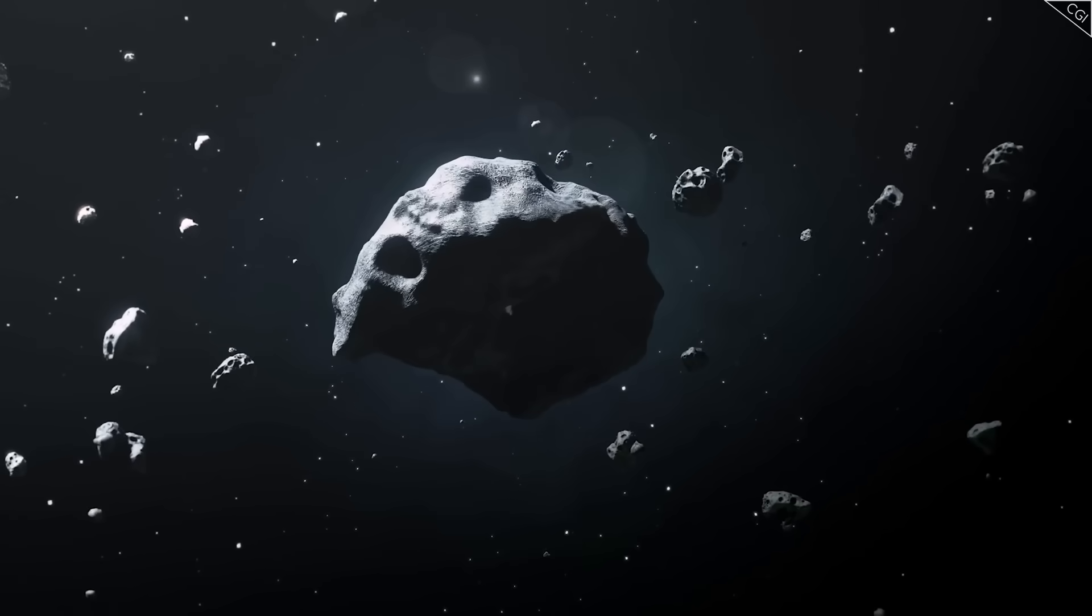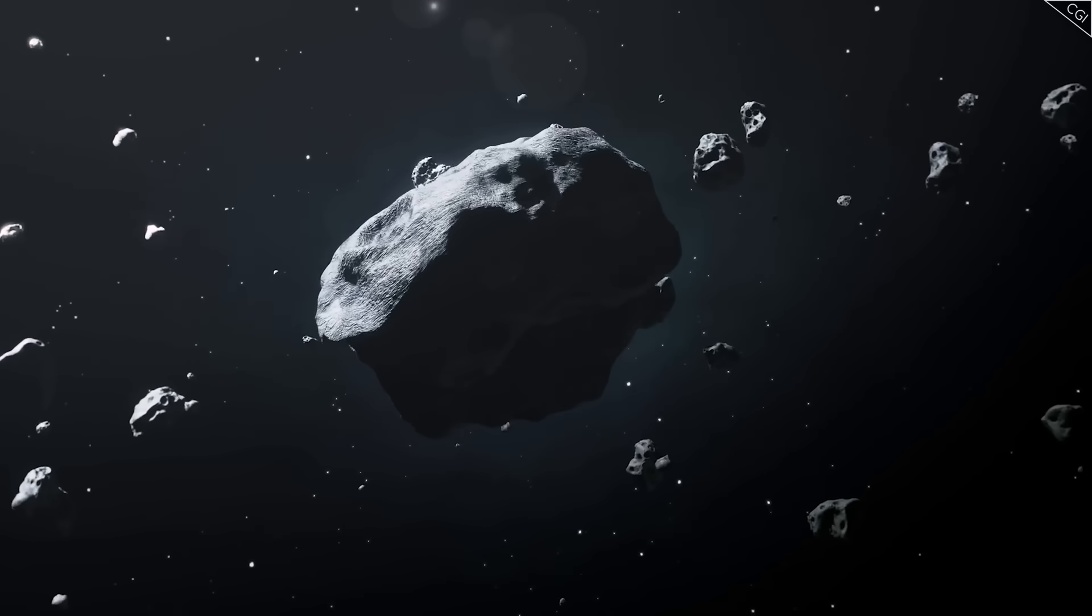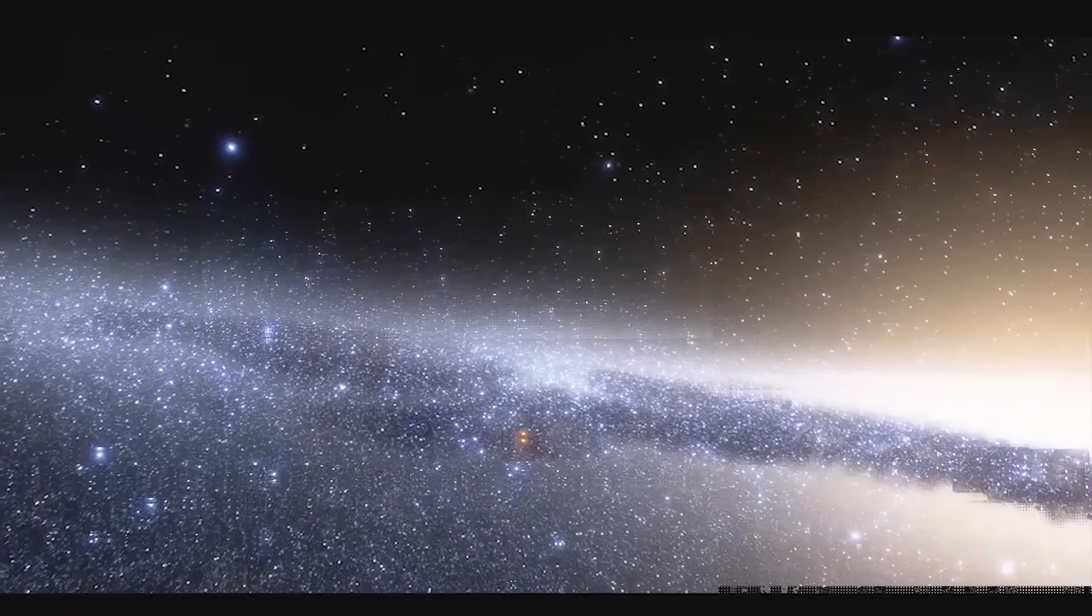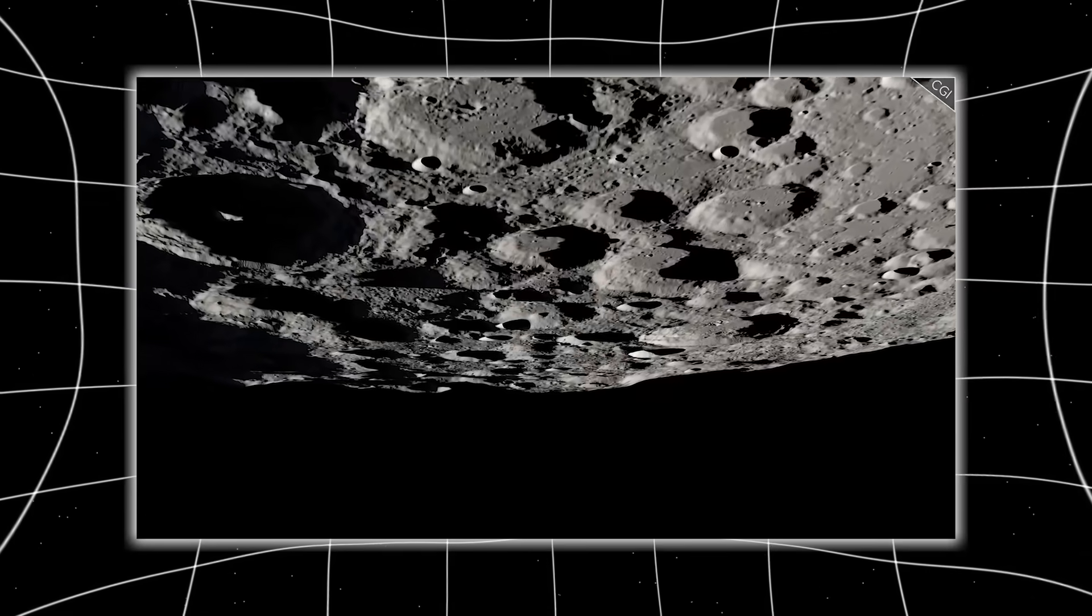3I Atlas wasn't just off course by a few hundred kilometers. It was 1.1 million kilometers away from where it should have been, roughly three times the distance between Earth and the Moon.